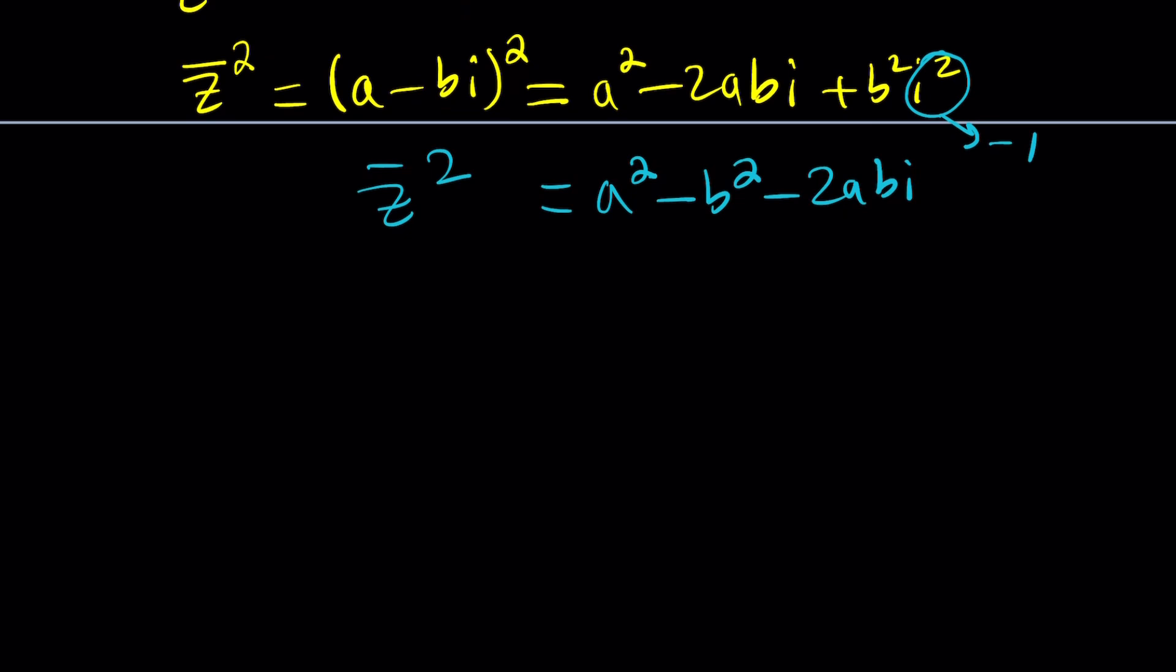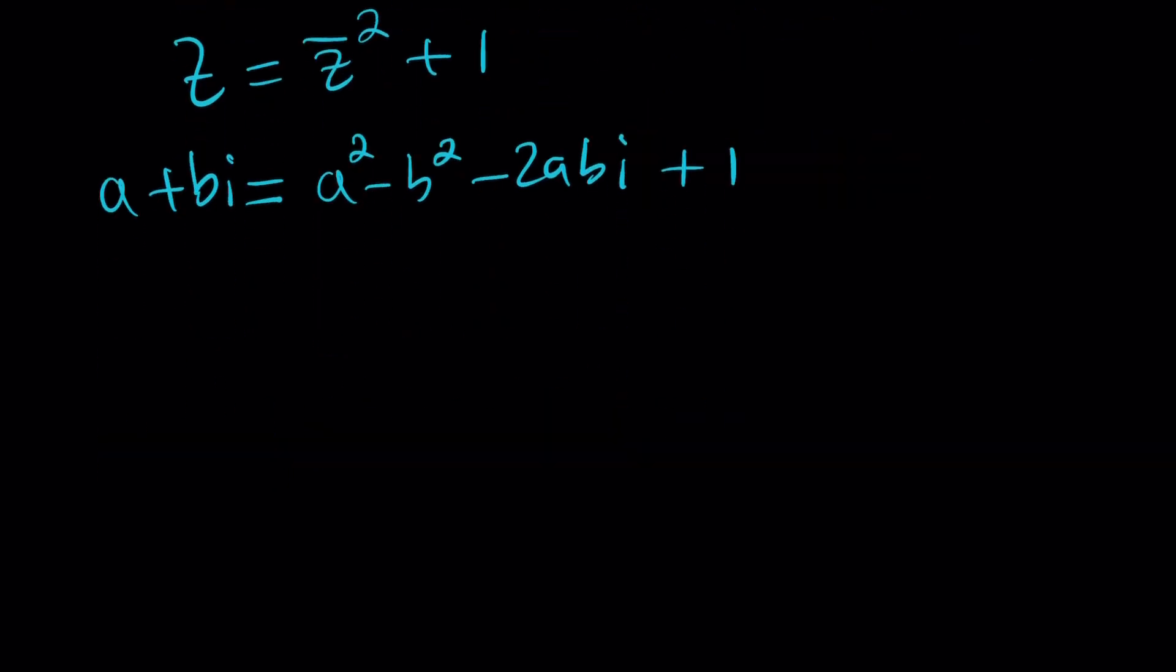So, we're going to get A squared minus B squared minus 2ABI as Z bar squared. I don't care about A minus B squared anymore. This is what I need. Now, this plus 1 equals Z. So I have Z equals Z bar squared plus 1. Z is A plus BI. Z bar squared is A squared minus B squared minus 2ABI, and I'm supposed to add 1. Let's go ahead and rearrange the right hand side a little bit, putting the real parts together.